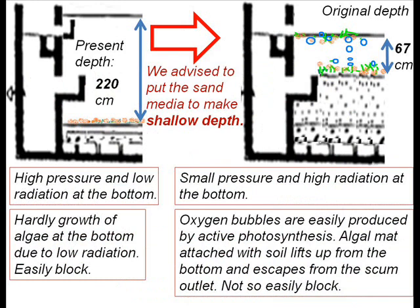We advise adding sand media to make shallow depths. In the case of a deep filter, there is high pressure and low radiation at the bottom, so algae cannot grow well and the filter is easily blocked. In the case of shallow depths, oxygen bubbles are easily produced by active photosynthesis. The algal mat attached with soil lifts up and escapes from the scum outlet, so this filter is not blocked by mat.